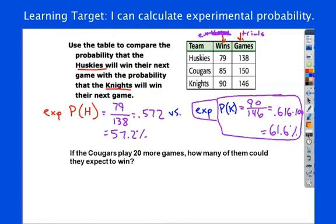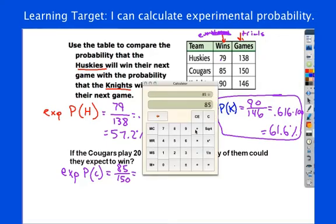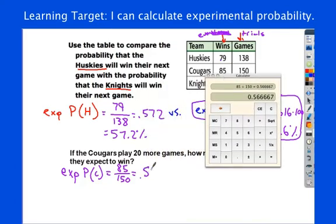All right. So, our experimental probability here is going to help us to determine the percentage of games that we would expect to win in the future. Right? The probability is about how likely is something to occur. This time, we're just basing it on paths. So, for the Cougars, the experimental probability for the Cougars is 85 to 150. In 150 trials, the event of winning occurred 85 times. If I divide that out, 85 divided by 150, I get 0.57. Let's just round that to 57%. 0.57.